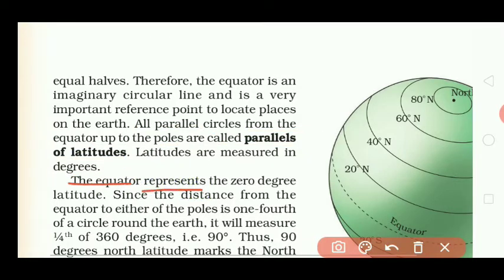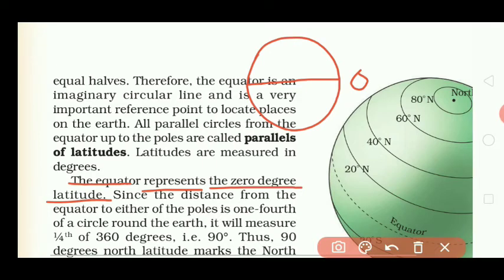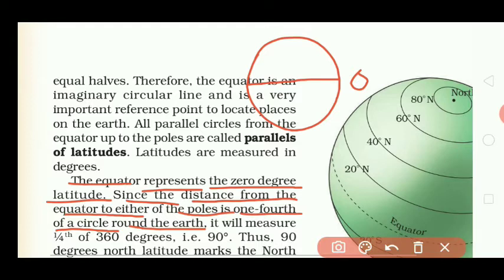The equator represents the zero degree latitude — हमारी जो equator की line है इसको हम zero degree पर count करते हैं। Since the distance from the equator to either of the poles is one-fourth of a circle around the earth, और हमारी जितनी भी lines हैं वो one-fourth circle की count होती है। It will measure one-fourth of 360 degrees — for example, 90 degrees.